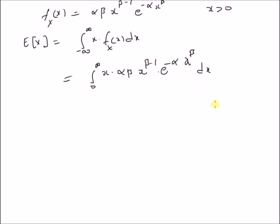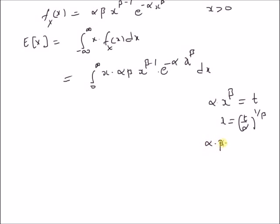Now we use a change of variables: let alpha * x^beta = t. Therefore, x = (t / alpha)^(1/beta). Taking the derivative on both sides, we have alpha * beta * x^(beta - 1) dx = dt, which is the term already present in the integral. So the integration becomes a simpler form.